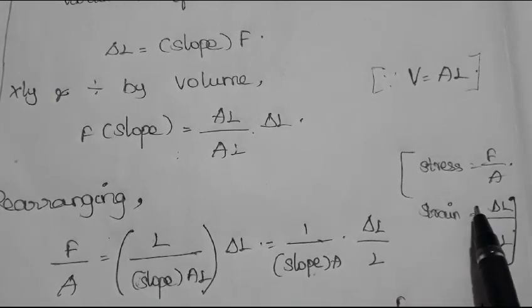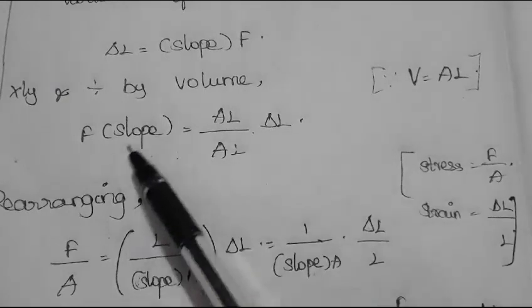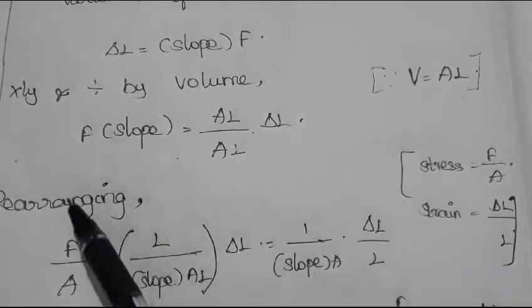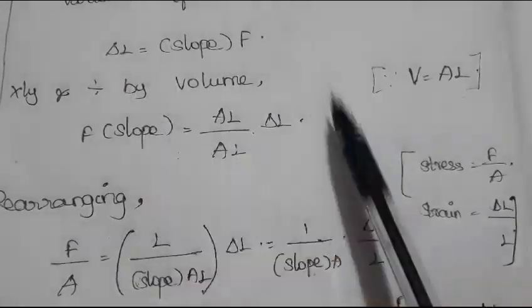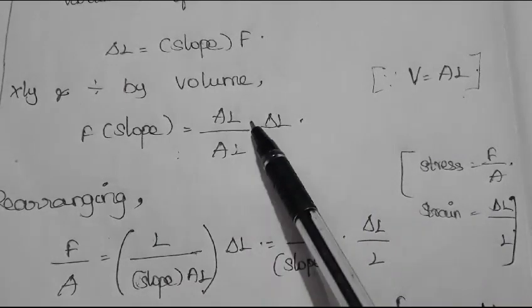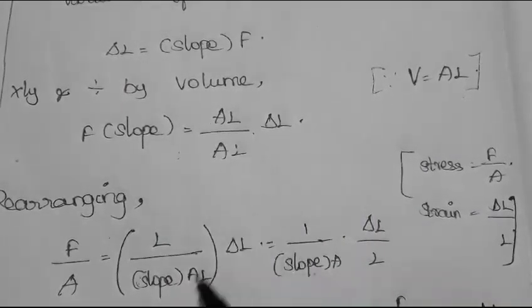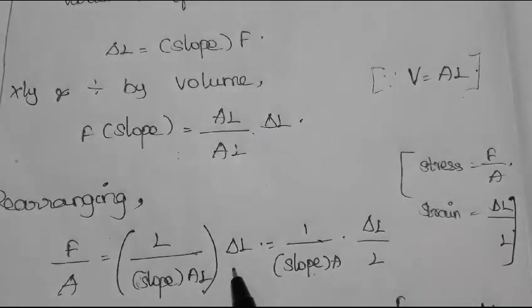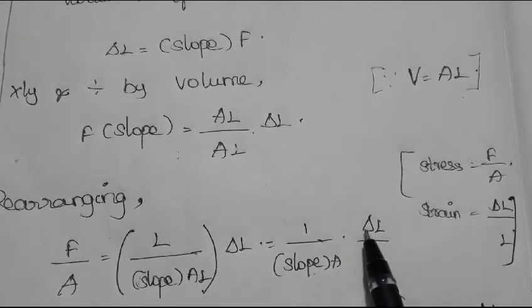Hooke's Law states that stress is directly proportional to strain. Stress is F divided by A, and strain is del L divided by L. Rearranging the expression: F by A equals the numerator involving slope and L divided by AL. This simplifies so that F by A is proportional to del L by L, with 1 divided by slope equal to a constant.